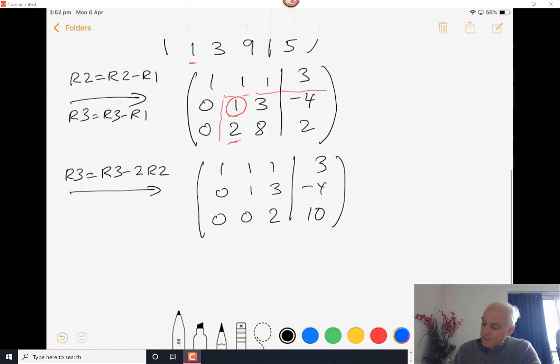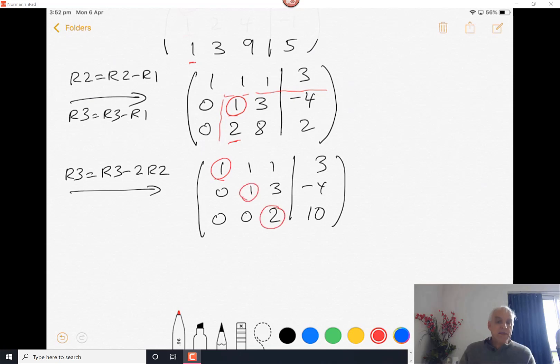So now it's in row echelon form. And at this stage we can deduce something about whether there are solutions and what kind of solution there's going to be. Is there going to be a unique solution, a one parameter family of solutions, two parameter family of solutions, and so on. What we can identify here is that there's going to be a single solution.